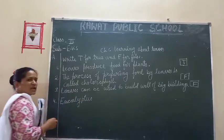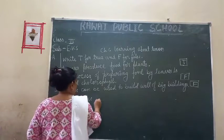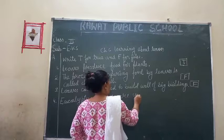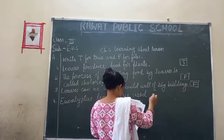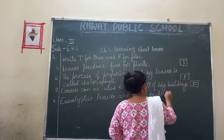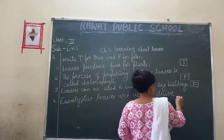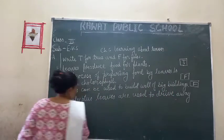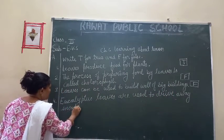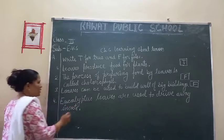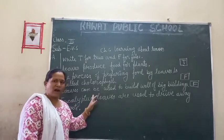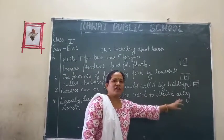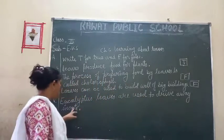Number 4: Leaves are used to drive away insects. Eucalyptus leaves, when used, can drive away insects.